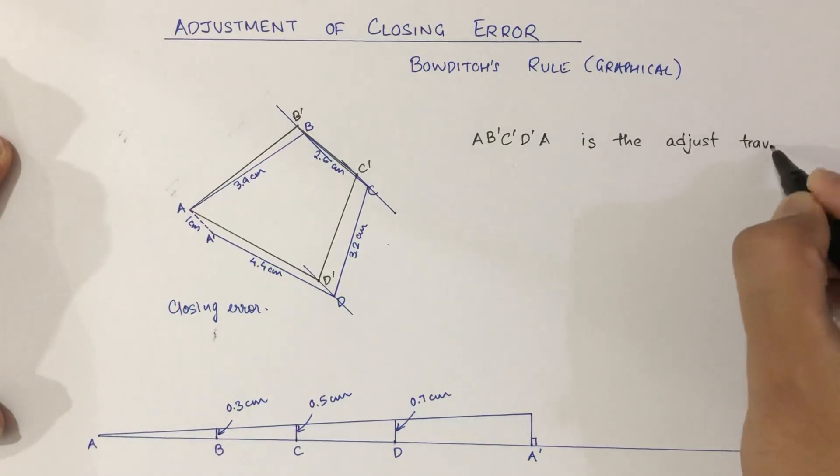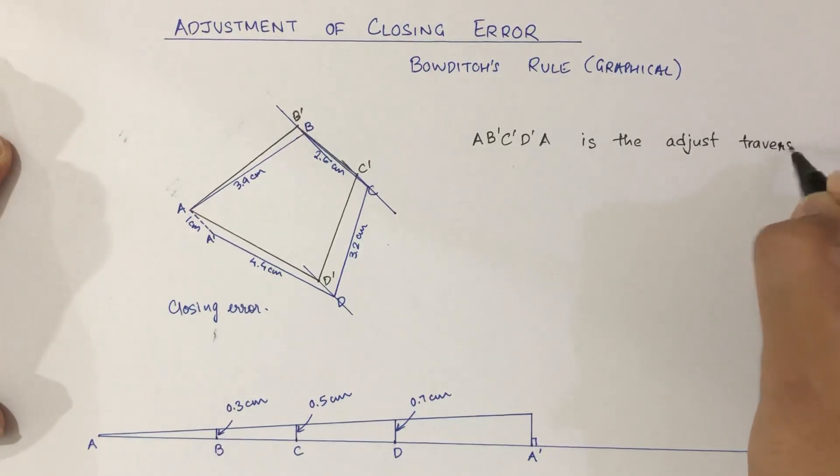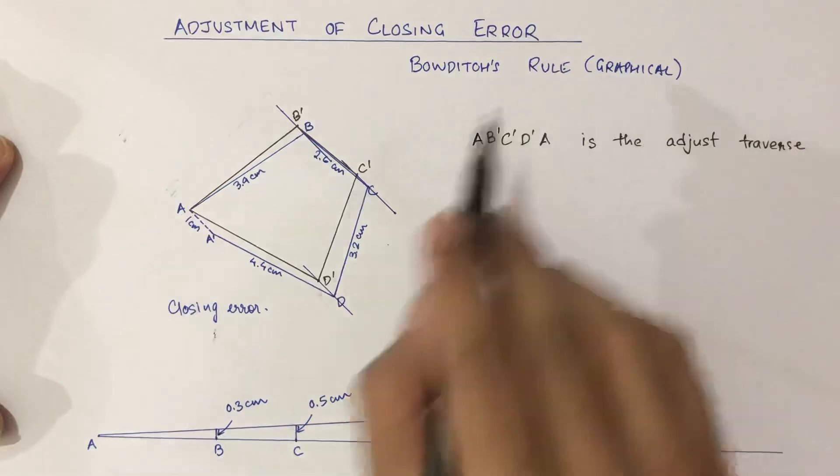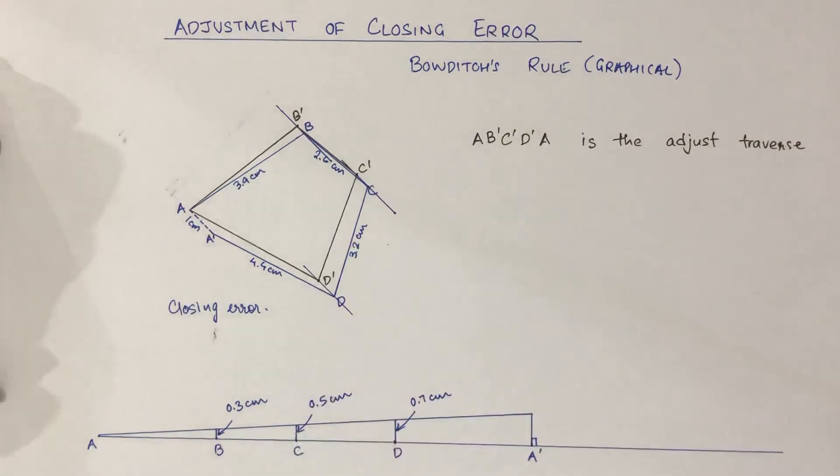This traverse has been adjusted by the Bowditch rule, which is a graphical method.